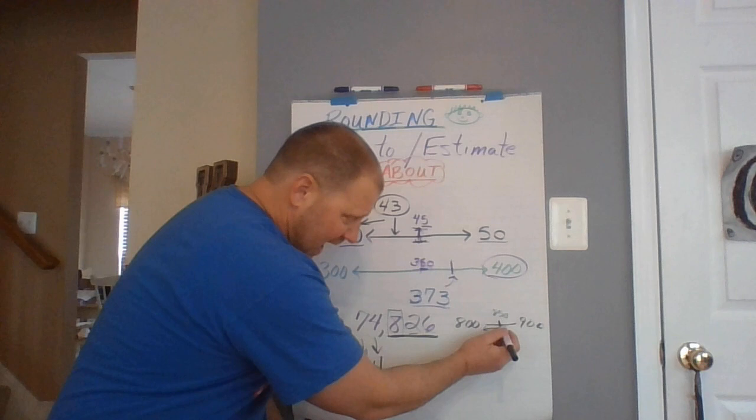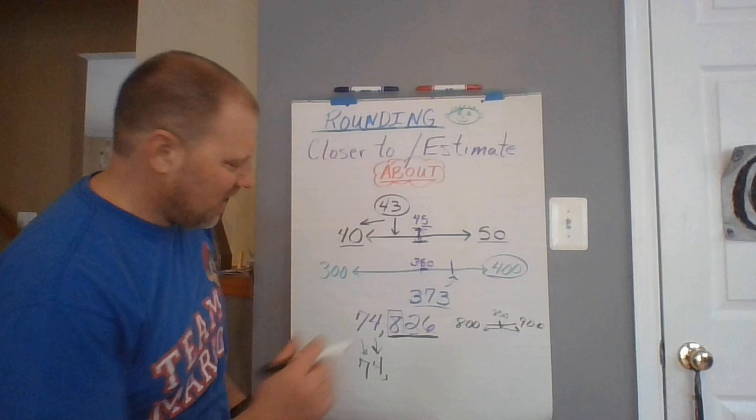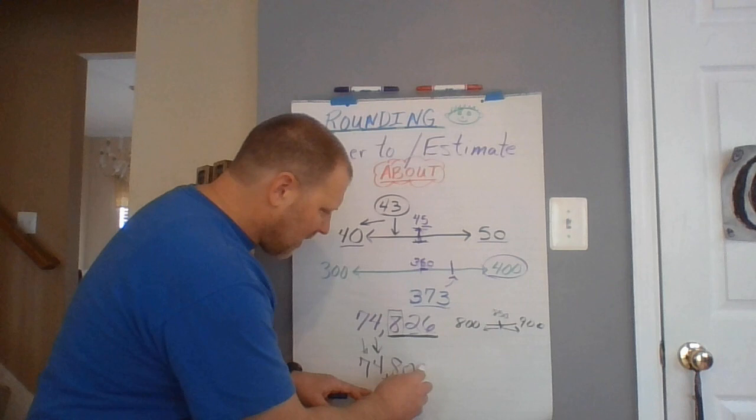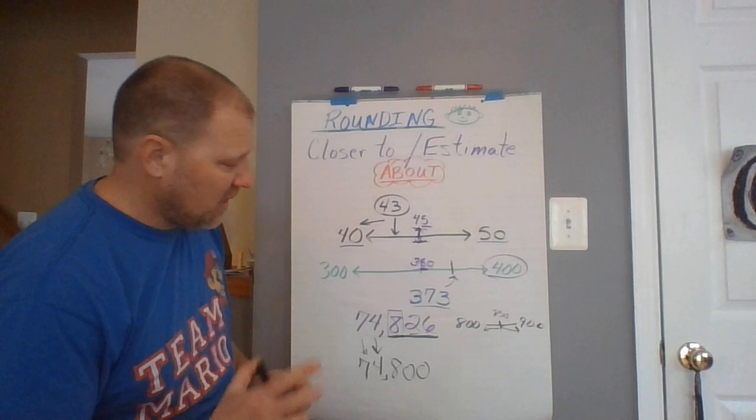Is 826 here? If it's here, it's going there. If it's larger than 850, it's going to 900. Well, in this case, Ada, it's going to 800. So your answer would be 74,800. That was a tricky one, Ada, but we got it.